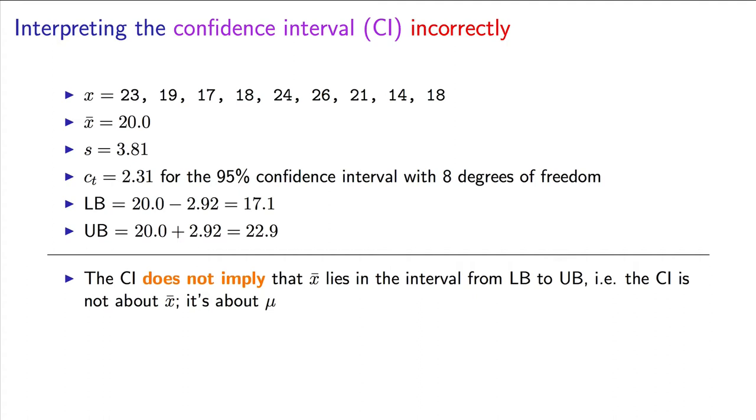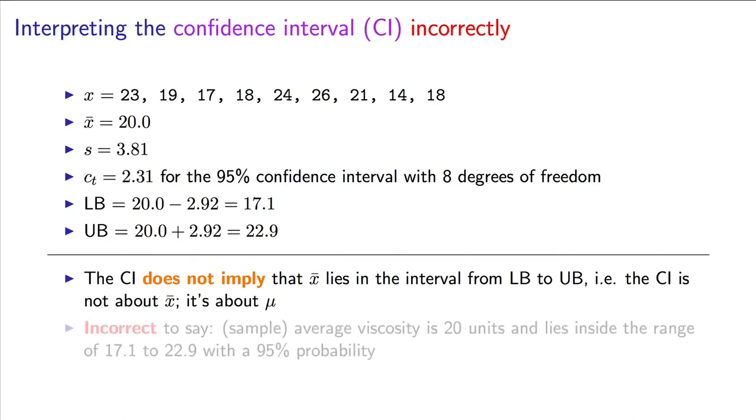It is about the parameter mu in this case. It is also not correct to say that the sample average of 20 units lies in the range of 17.1 to 22.9 with a probability of 95%. Again, the sample average always lies within the range, and the confidence interval is not about the probabilities of finding something inside a range.